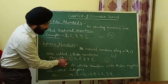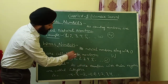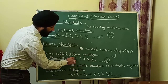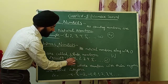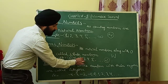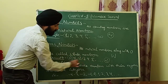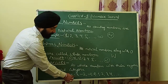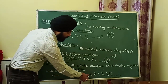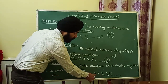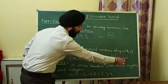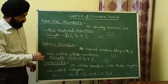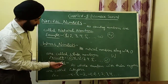Our next type is integers. All whole numbers along with their negatives are called integers. For example: ..., minus 4, minus 3, minus 2, minus 1, 0, 1, 2, 3, 4 and so on.